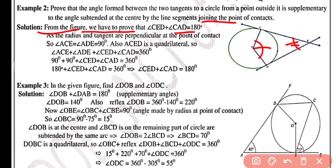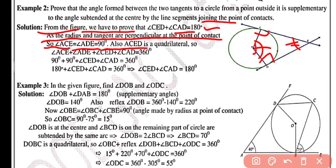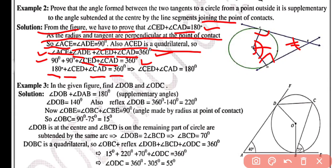Since the radius and tangent are perpendicular at the point of contact, angle ACE equals angle ADE equals 90 degrees. ACED is a quadrilateral, so by the angle sum property: angle ACE + angle ADE + angle CED + angle CAD = 360 degrees. Substituting: 90 + 90 + angle CED + angle CAD = 360 degrees, giving 180 + angle CED + angle CAD = 360 degrees.